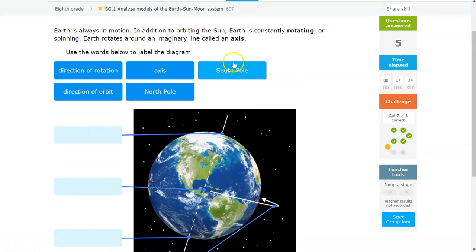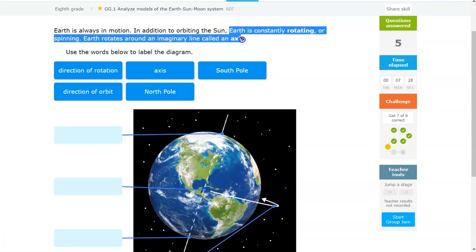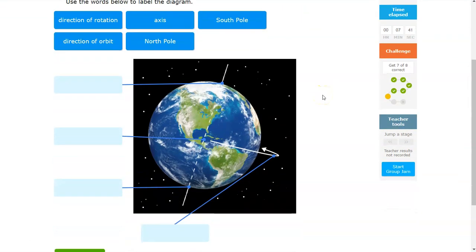Over here, the question lets you know what rotating is, which in this instance means that it's constantly spinning. And it also lets you know that Earth rotates around the imaginary line called an axis. So those two pieces of information will be quite useful in labeling this diagram here.